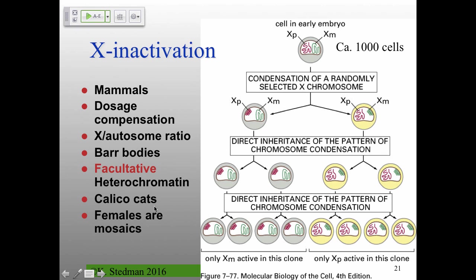All females are mosaics because of this randomly selected X chromosome at about the thousand-cell stage. Regarding the Barr body being passed down — it has to do with demethylation, reversing the steps we're about to talk about. But it's very specific to germline cells. In haploid cells, those Barr bodies have been decondensed. At about a thousand cells during development, random cells will have either the paternal XP or maternal XM condensed, and that state is maintained through an epigenetic process.